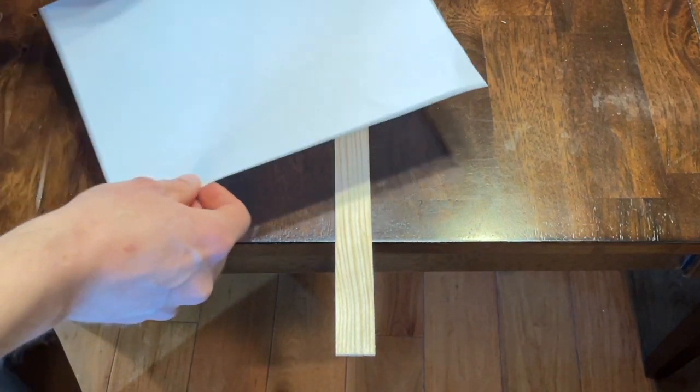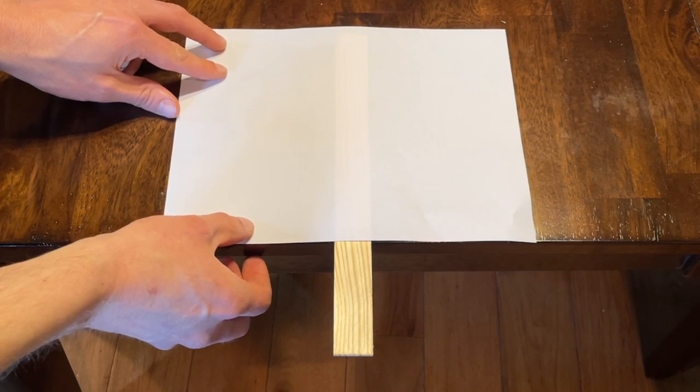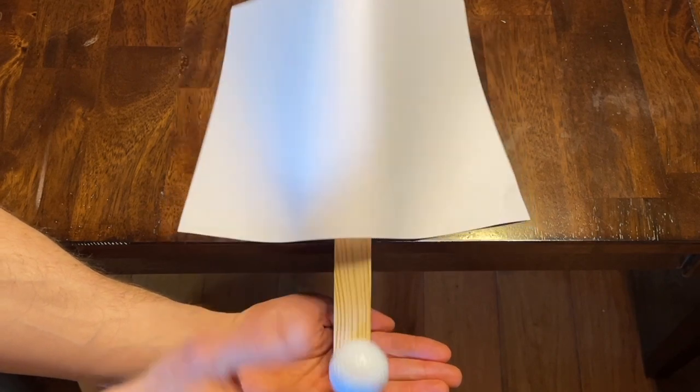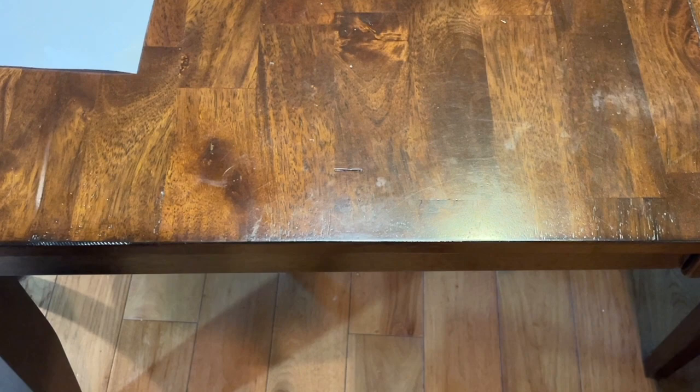So what happens now if I unfold that piece of paper and put it over the end of the paint stick and now drop the ball from a few inches. Any guesses? It dropped very slowly and why do you think that is the case?